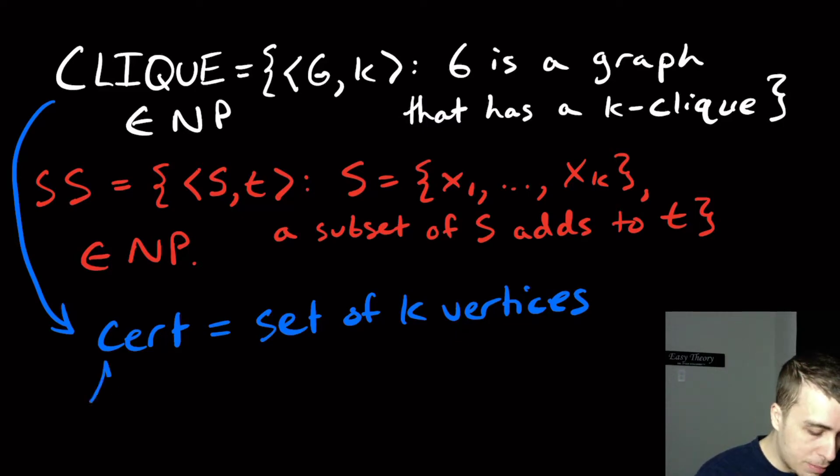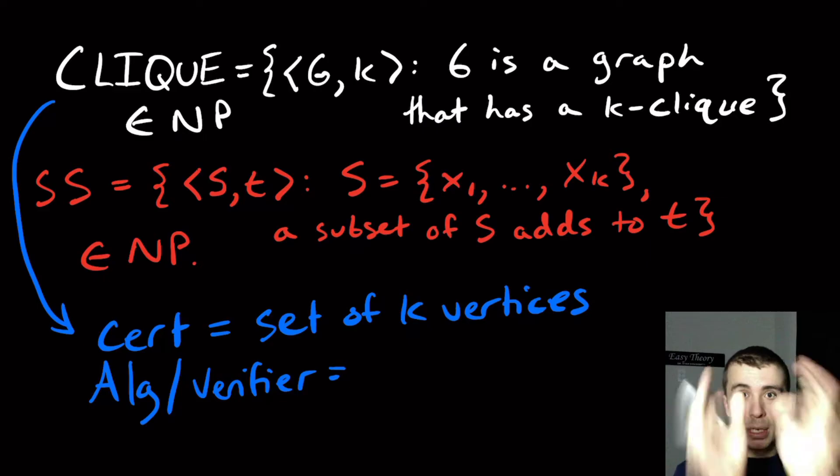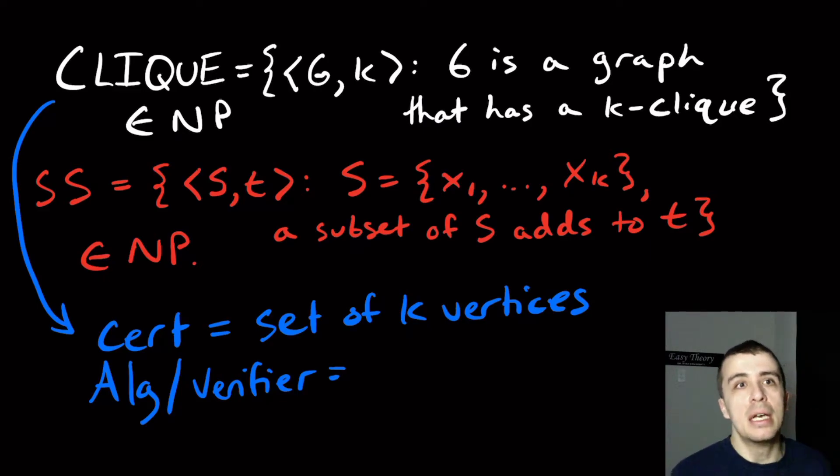And what would the algorithm do? Maybe I'll write it as verifier. What would the verifier do? So you're given the set of k vertices and you just have to check whether or not that k vertices really are a certificate for that graph.